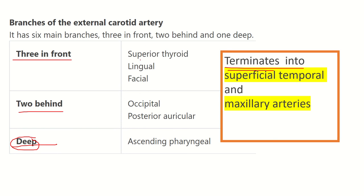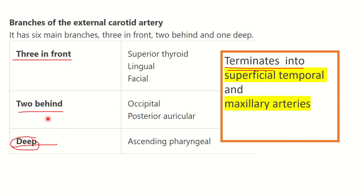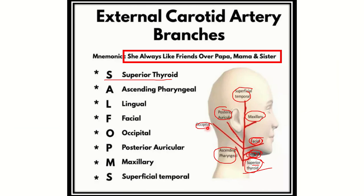Three from the front: superior thyroid, lingual, and facial — these are the anterior branches of the external carotid artery. Then two from behind: occipital artery and posterior auricular artery. We can see in the picture the occipital artery and posterior auricular artery arising from the posterior aspect of the external carotid artery.